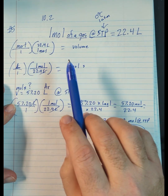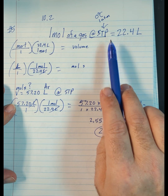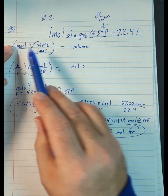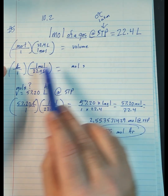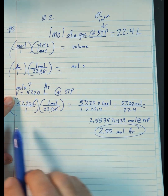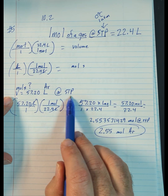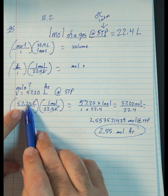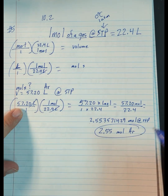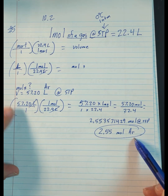For number five: one mole of a gas at STP, which is 0 degrees Celsius and one atmosphere, is always 22.4 liters. In this problem the volume is 57.20 liters at STP and we're talking about argon. We put 22.4 liters on the bottom because we want liters to cancel out, and moles on top because we want to be left with the number of moles. We multiply across the top and bottom, divide, and we end up with 2.55 moles of argon.